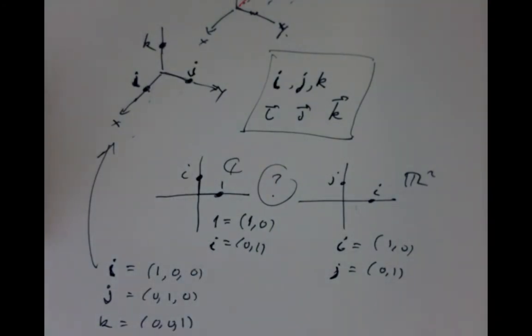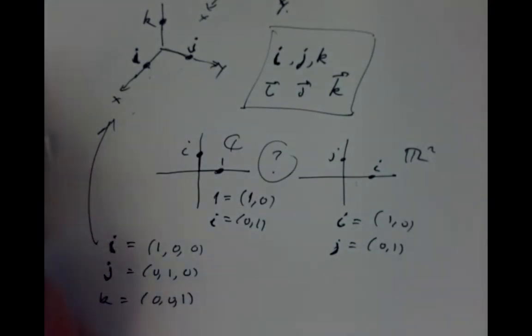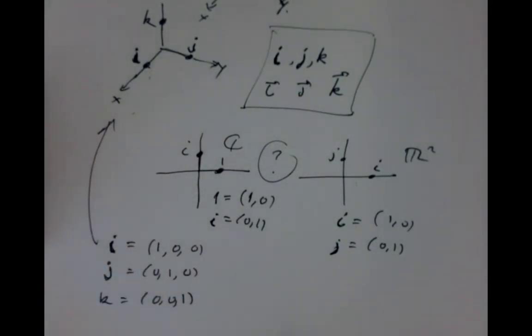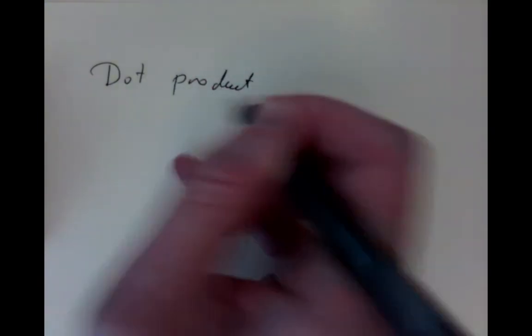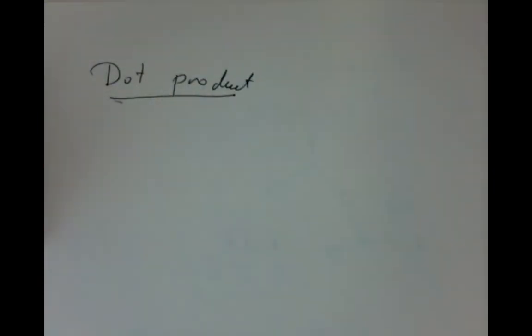One of the classic problems that people thought about in the early 19th century, particularly Hamilton, was the problem of how to multiply vectors — what's the reasonable notion for multiplying vectors that would hopefully extend the multiplication of complex numbers. There seem to be two reasonable standard conventions for doing this: one is the dot product, and the other is the cross product. The dot product arises much more often than the cross product.